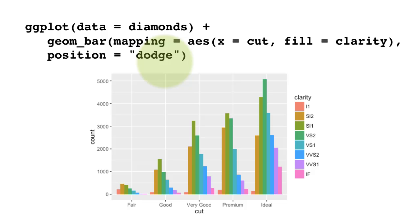So we've seen stack, where the individual subbars are stacked one on top of the other. We've seen identity, where all the subbars start from the same level. Now we are seeing dodge, where each subbar is plotted to the side of the other subbars.